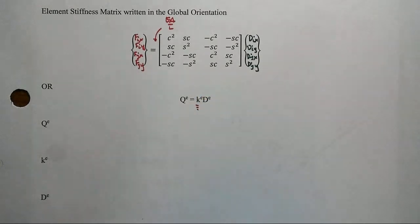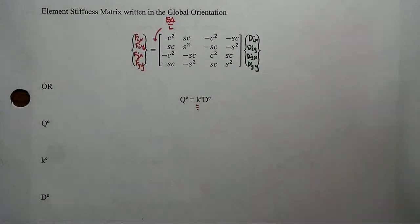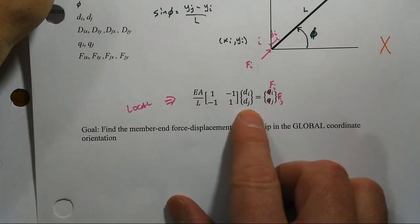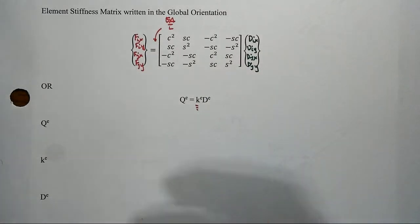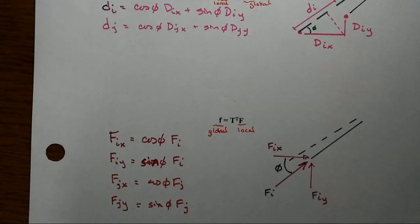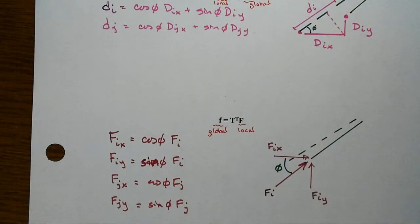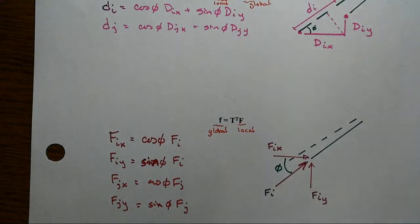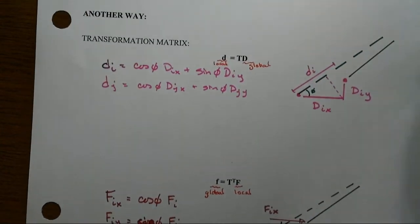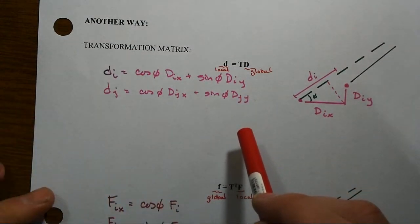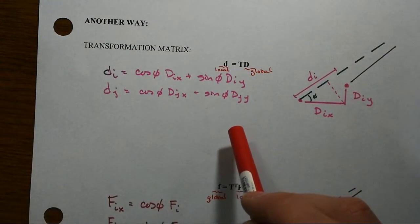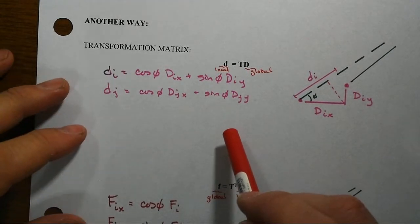We had started from this little guy that's all in the local system and transformed it all the way out. Well there's another way that we could approach this and it involves this thing called the transformation matrix. One of these is going to transform geometry and another is going to transform statics.